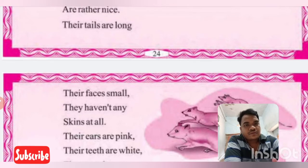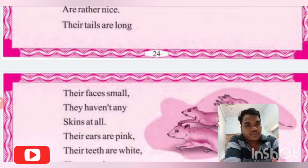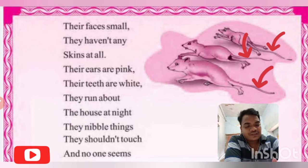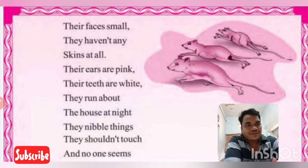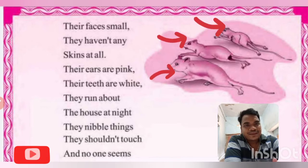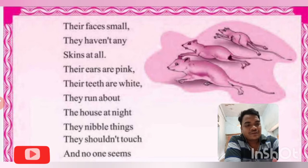Their tails are long, their faces are small. What are the tails of the mice like — small or big? Look at this picture. The tails of mice are long. Next, their faces are small. Look at this picture — the faces of mice are small. They haven't any skin at all — it means they have very thin skin.